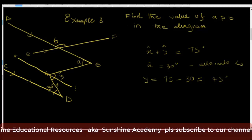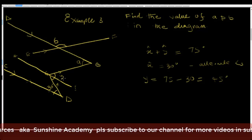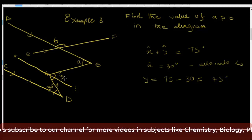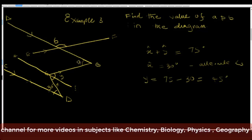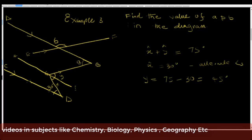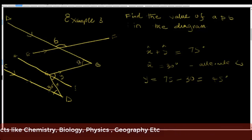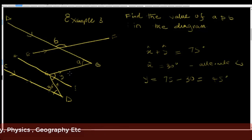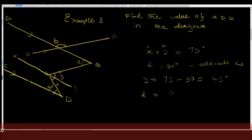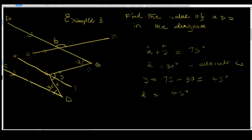Angle y is also alternate to angle a. Because they are alternate angles, angle a is equal to angle y, which means angle a is also equal to 45 degrees.